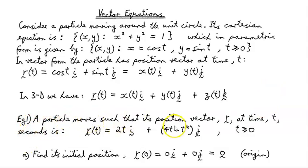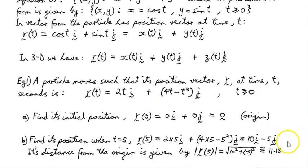Now, a particle moves such that its position vector r at time t, our first example here, at time t seconds is given by, time is measured here in seconds, r(t) = 2ti + (4t - t²)j. In the j direction, t ≥ 0 because we're talking about time here.